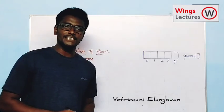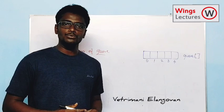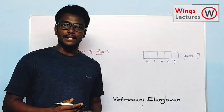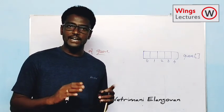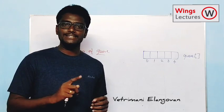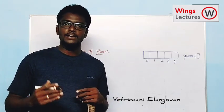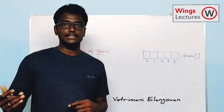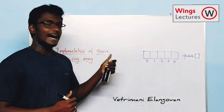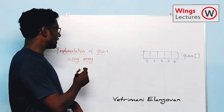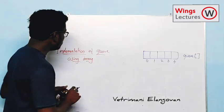Hi dear students, this is Vetri. Today we're going to see the implementation of a queue using an array. We have already discussed two different types of implementation: the first is static implementation using array, and the second is dynamic implementation using linked list. Today we're going to see the implementation of a queue using array, so let me explain with the coding.